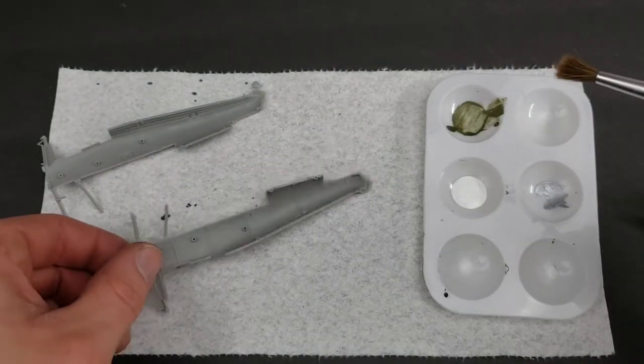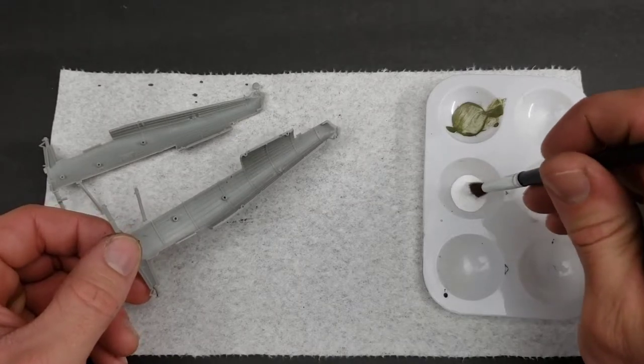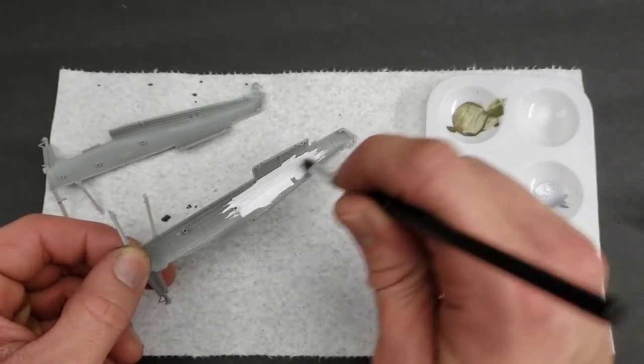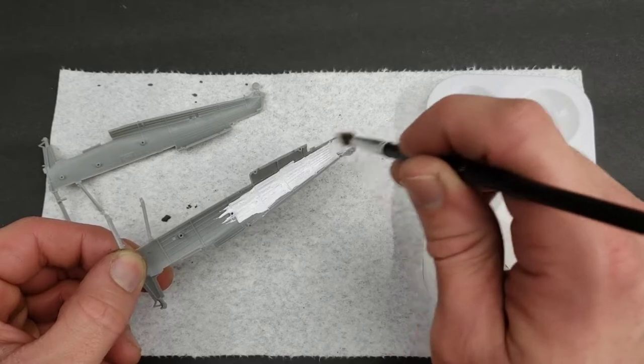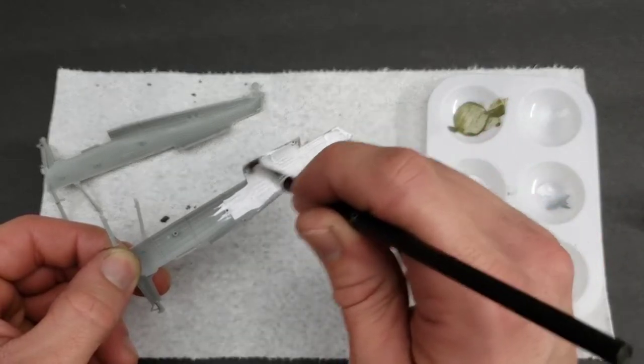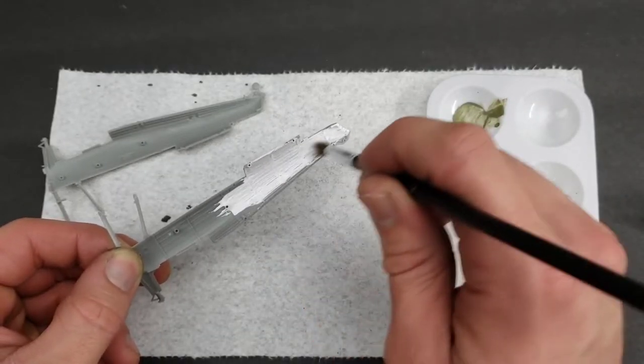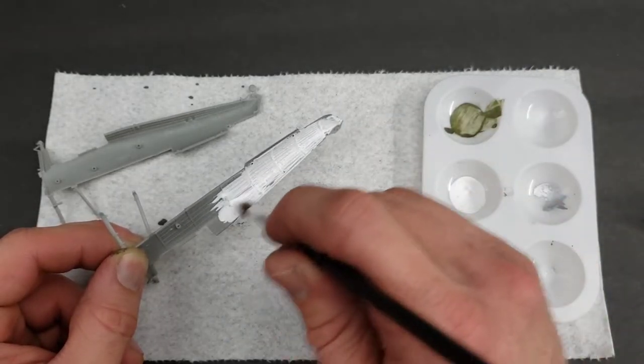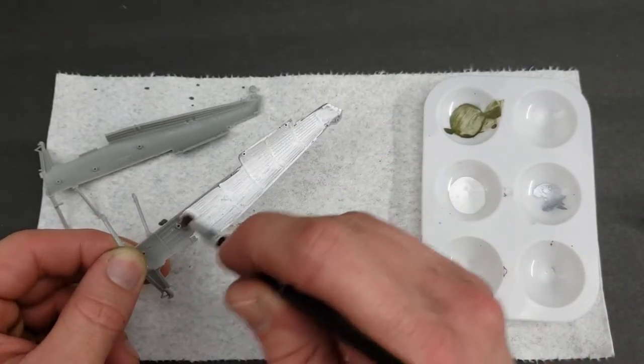I did some brief research on Stearmans and it showed that the inside of this thing was kind of like a creamy white color, so I just went ahead and did white. I just used a bigger brush to apply the paint.